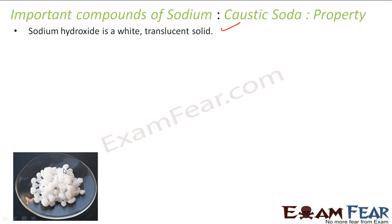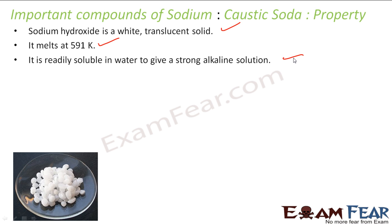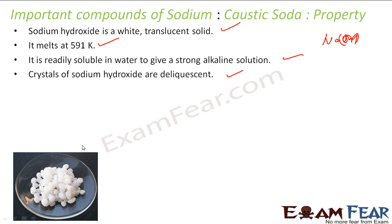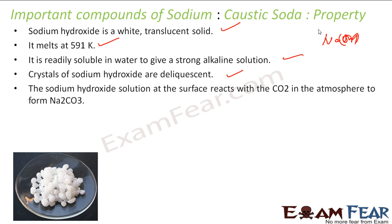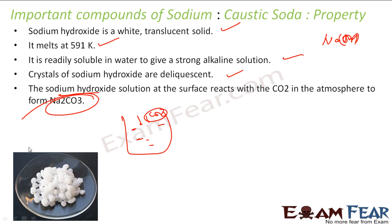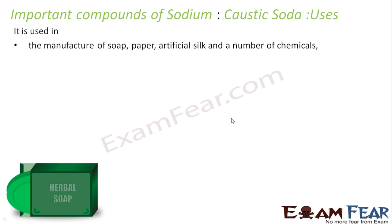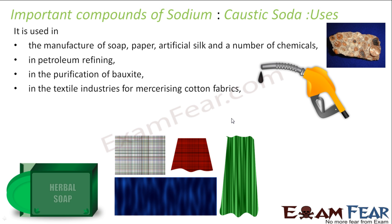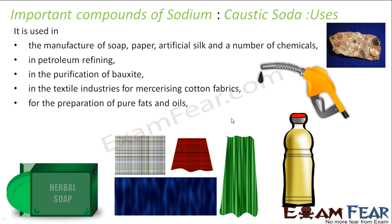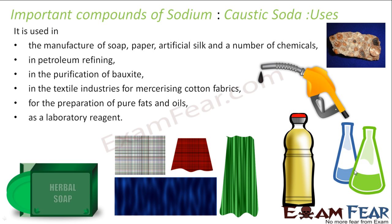Properties of caustic soda (NaOH): it is a white translucent solid that melts at 591K. It is very soluble in water and gives a strongly alkaline solution. The crystals of sodium hydroxide are deliquescent. At the surface, NaOH reacts with CO2 to form Na2CO3. Uses include manufacture of soap, silk, and various chemicals; it is used in the petroleum industry, for purification of bauxite, for mercerizing cotton fabrics in the textile industry, and in laboratories.